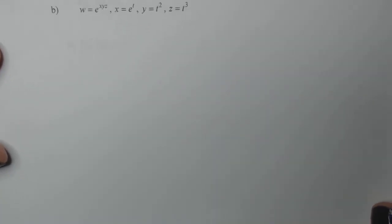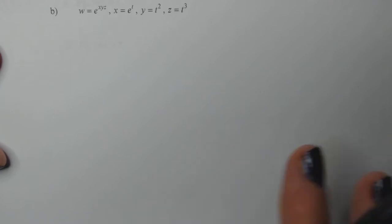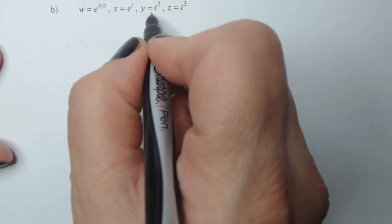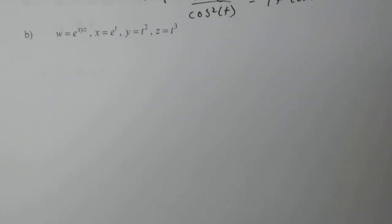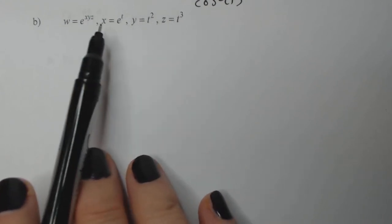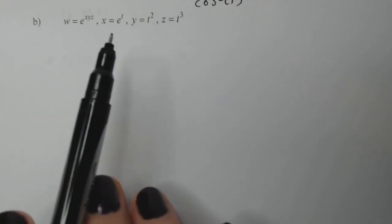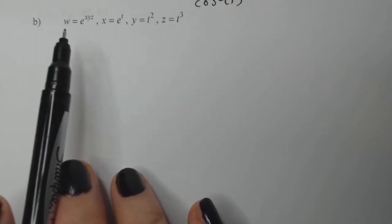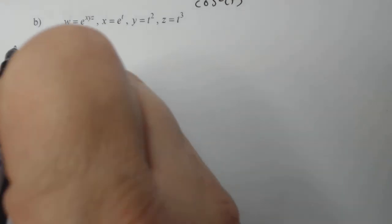Now we have w as a function of x, y, and z. W is a function of x, y, and z, where x is e to the t, y is t squared, and z is t cubed. That's different from the previous example because we have three variables instead of two. If I substituted all three things back in, w would be a function of t only, so what we want is dw/dt.